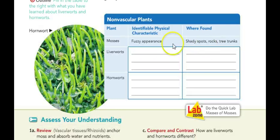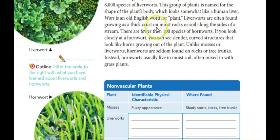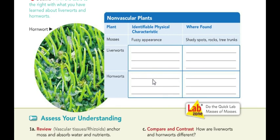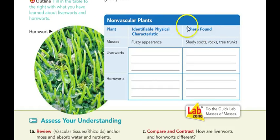On page 92, fill in the chart here. We're summarizing the three types of nonvascular plants: mosses, liverworts, and hornworts. They've filled in mosses for you. This chart identifies the physical characteristics of each. Mosses have a kind of fuzzy appearance. For liverworts, describe what they look like — look in the paragraph above, which tells you what the comparison is. Same for hornworts — describe what they look like using the wording there. The third column identifies where these three types of nonvascular plants are found. Mosses are found in shady spots, on rocks, and tree trunks.